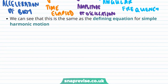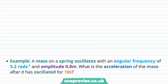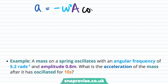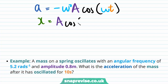We can see that this is the same as the defining equation for simple harmonic motion. We've defined acceleration as minus omega squared times amplitude times cosine of omega times t. And since displacement x equals amplitude times cosine of omega times t, we can easily see that acceleration equals minus omega squared times x, which is the defining equation of simple harmonic motion.